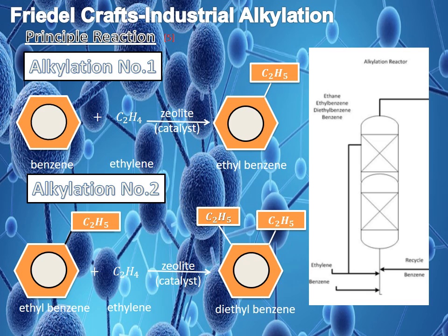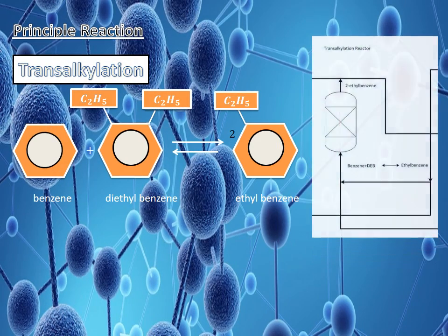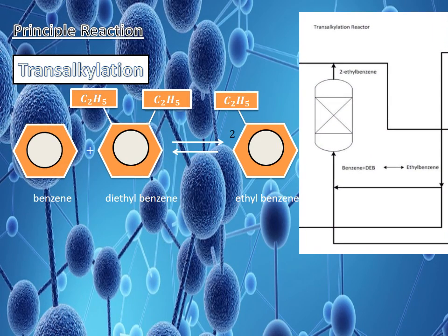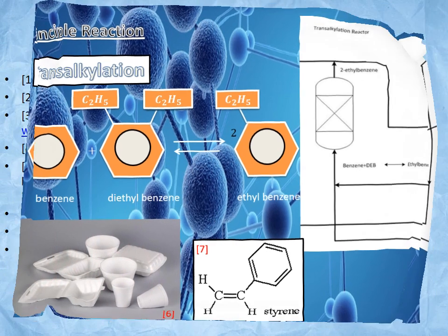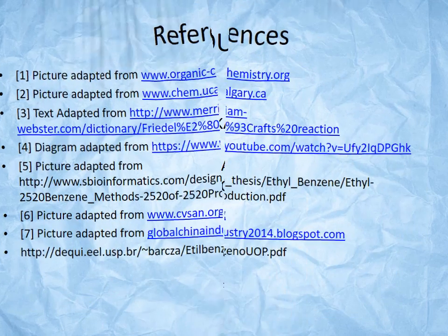Benzene reacts with ethylene to form ethylbenzene using a zeolite catalyst at 100 degrees Celsius and 25 bar. The ethylbenzene then reacts with excess ethylene to form diethylbenzene. In the transalkylation process, the diethylbenzene reacts with unreacted benzene to form 2 molecules of ethylbenzene, which is the monomer of styrene used to form polystyrene.